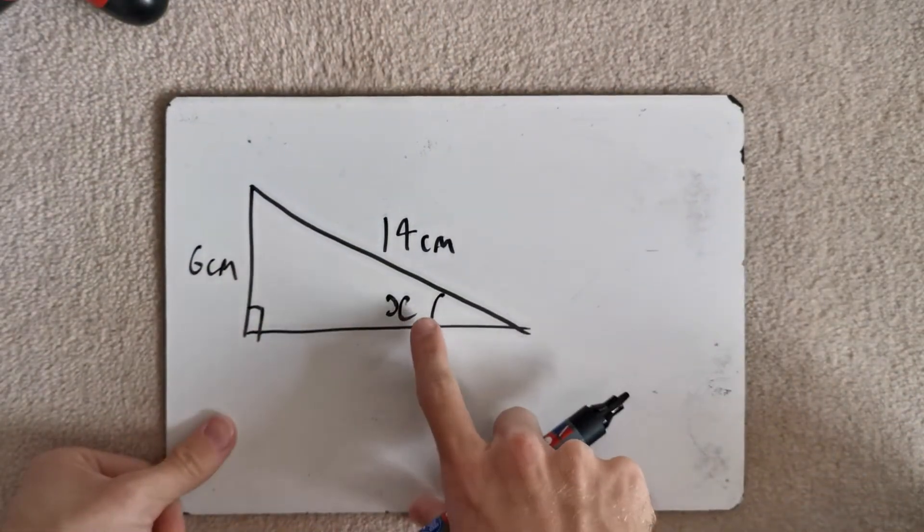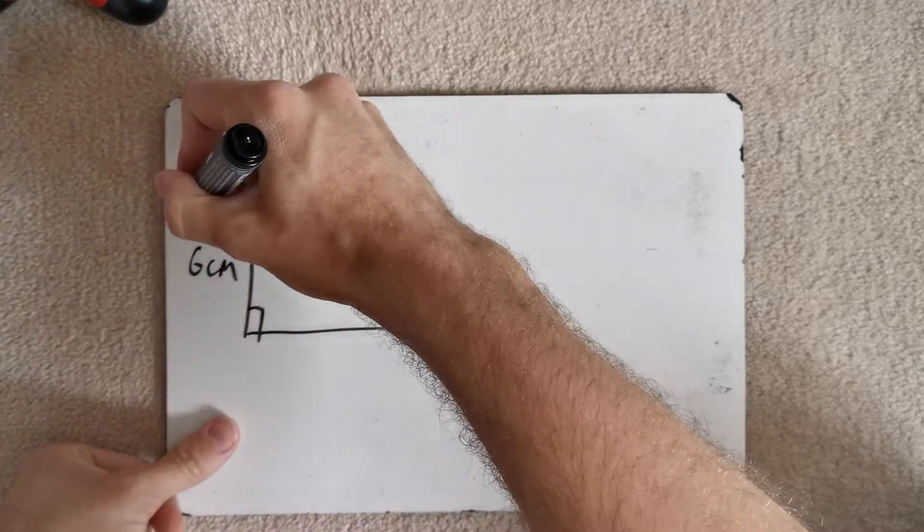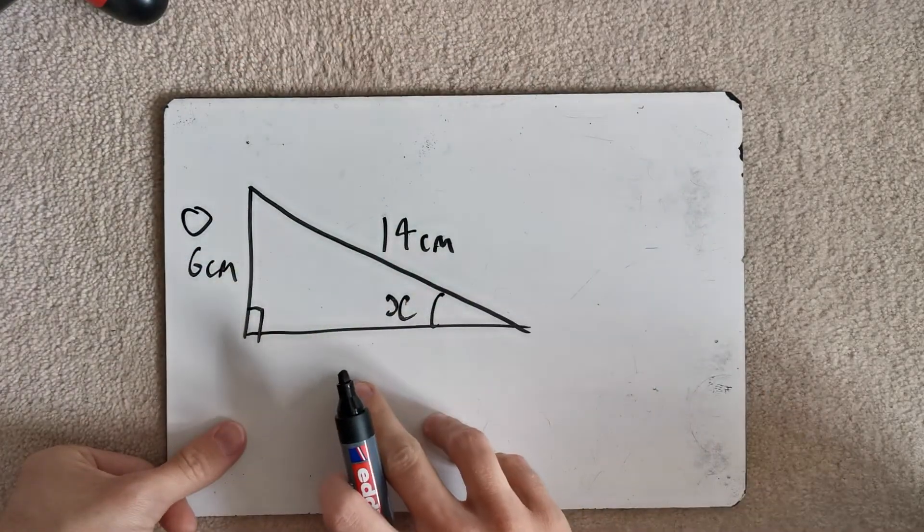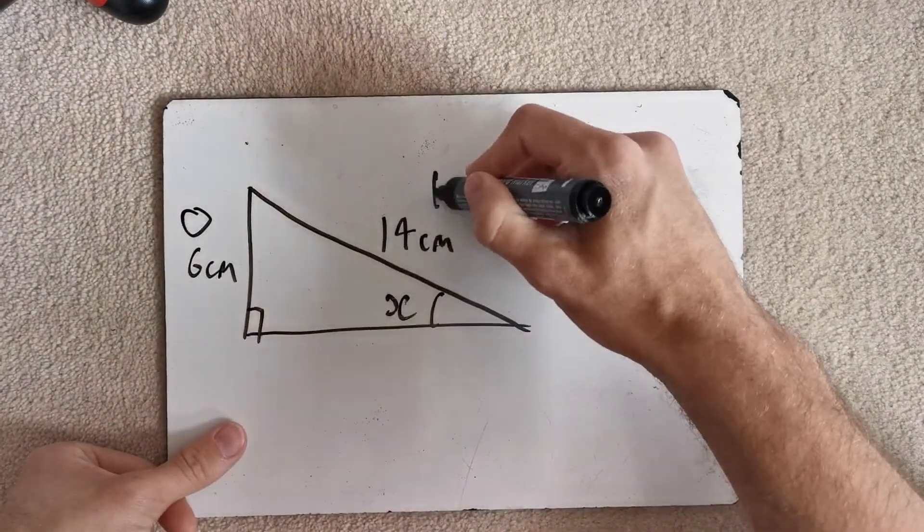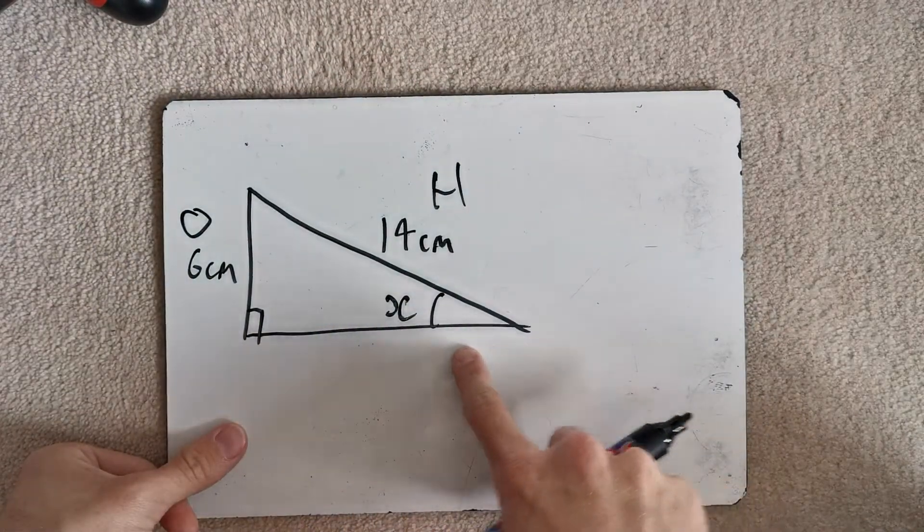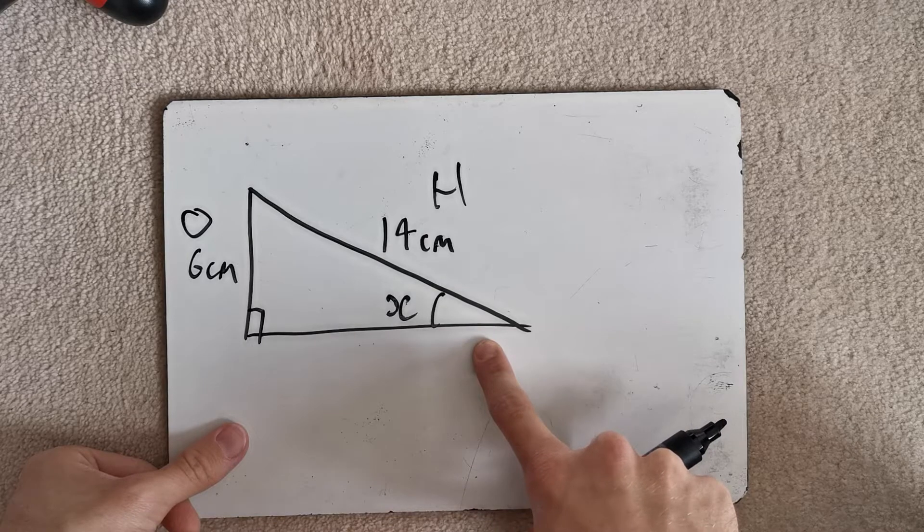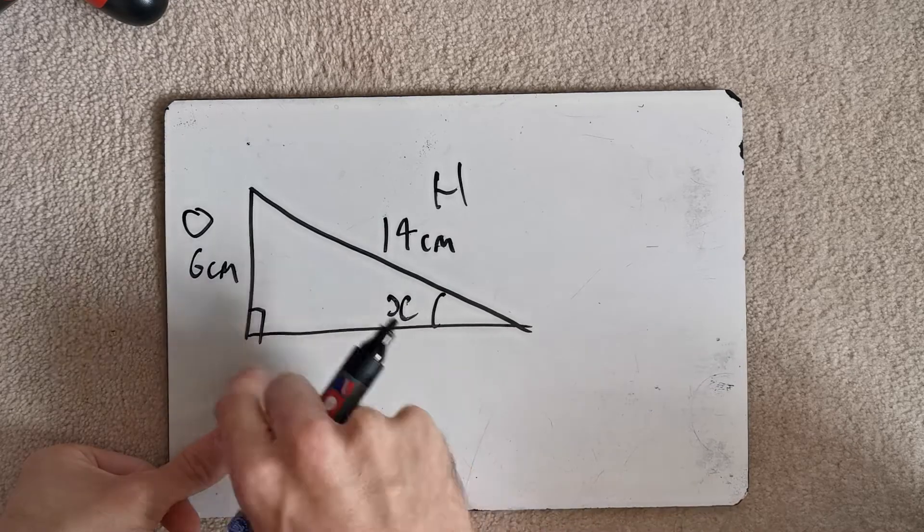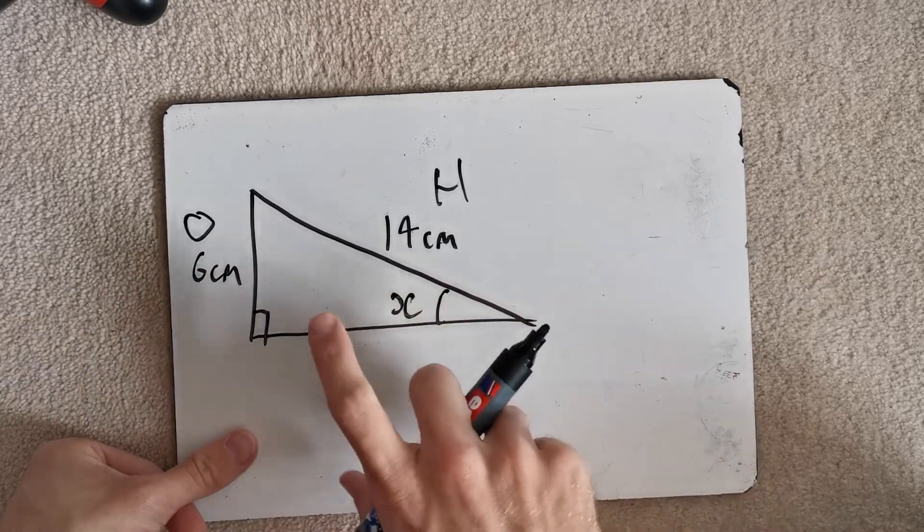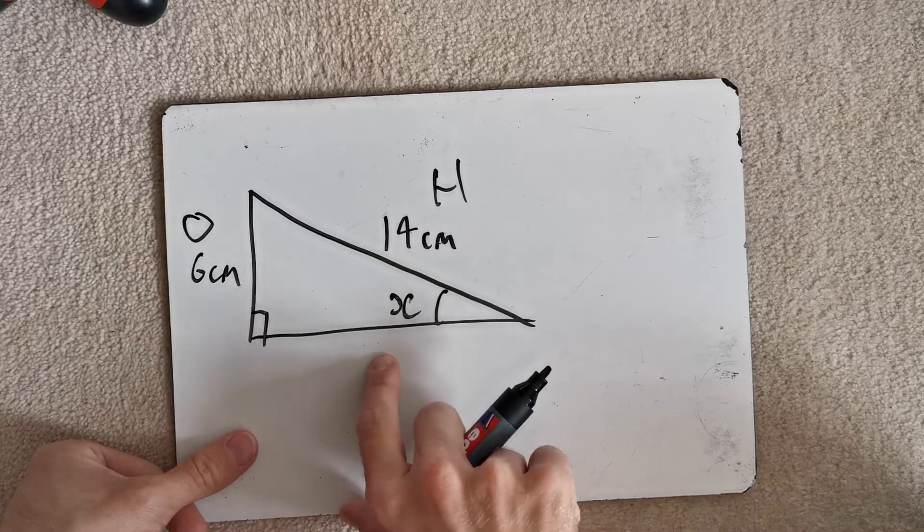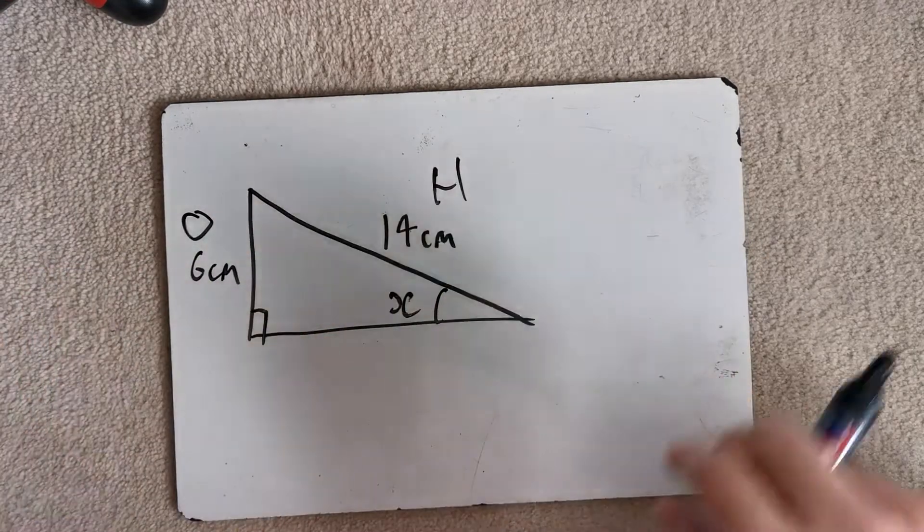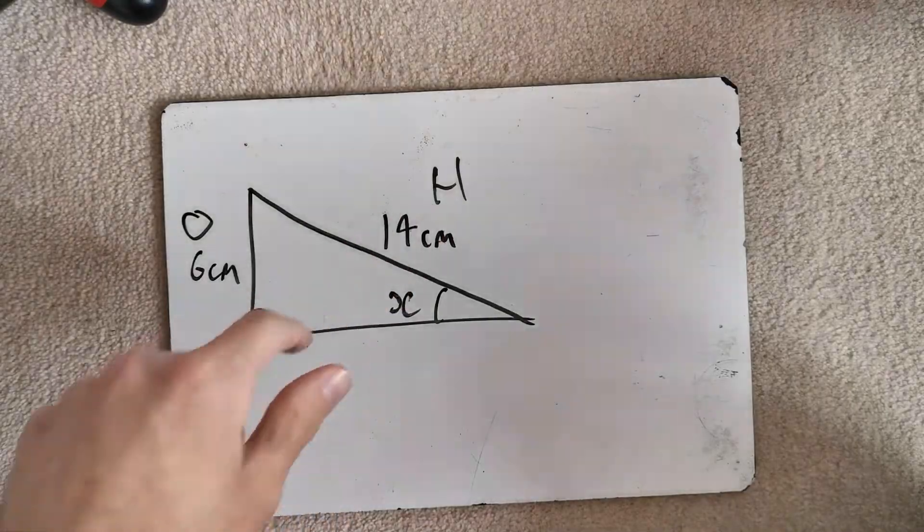We've got the opposite there and we've also got the longer side, we've got the hypotenuse. There's nothing on this one, we don't count the angle as being on this, because there's no actual label for the length of what that is. So we don't need to label that, we don't need to worry about the adjacent at all. We've got O and H.